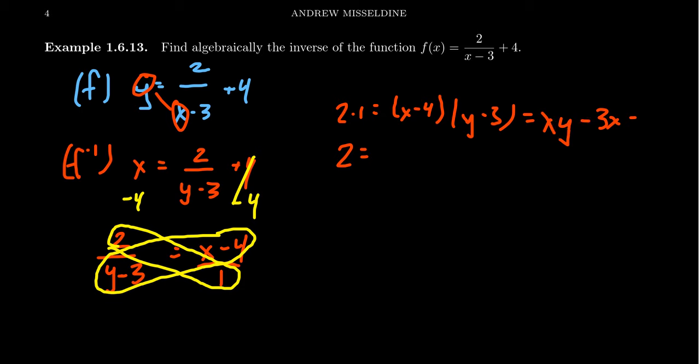So instead of foiling the right-hand side, because our goal is to solve for this y right here, instead, look at the expression x minus 4 and pretend like that's the coefficient of this expression right here, y minus 3. Divide both sides by x minus 4, and you have to do that to the other side as well, x minus 4. Then you'll see that the y, you'll get a y minus 3 from the right-hand side. Then you get 2 over x minus 4 like so.